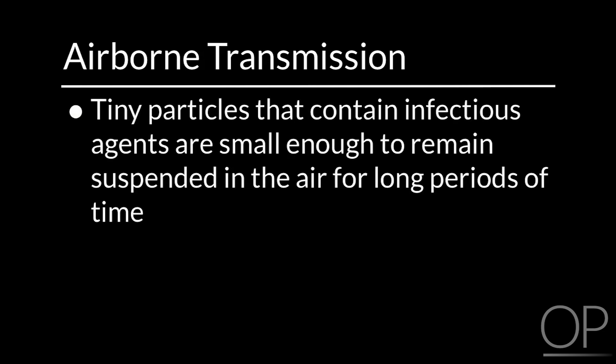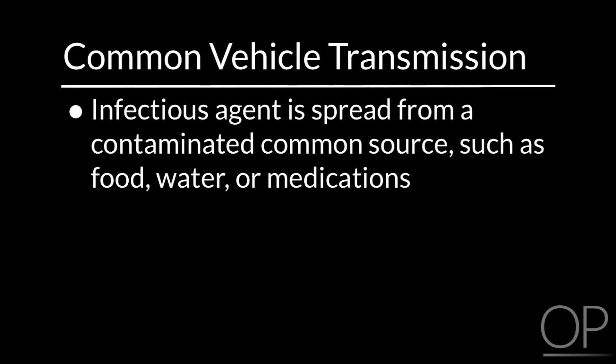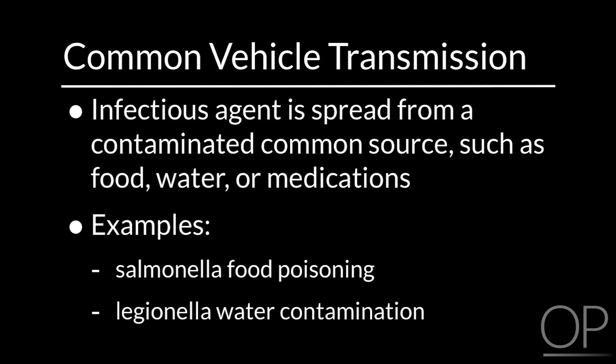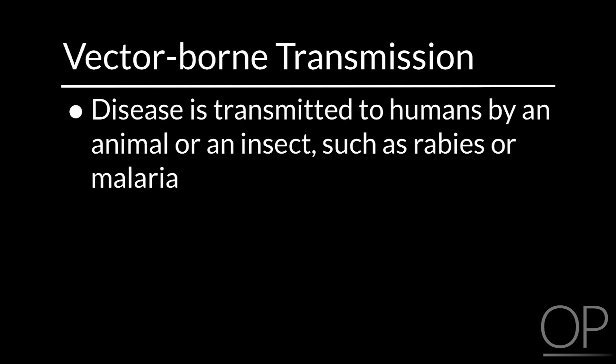Airborne transmission occurs when tiny particles containing infectious agents are small enough to remain suspended in the air for long periods of time. These particles may travel over long distances on air currents, and infection occurs when these particles are inhaled by a susceptible person. Close contact with a sick person is not needed. Common vehicle transmission occurs when an infectious agent is spread from a contaminated common source such as food, water, or medications — for example, salmonella food poisoning or legionella water contamination. Vector-borne transmission is when a disease is transmitted to humans by an animal or insect, such as rabies or malaria.